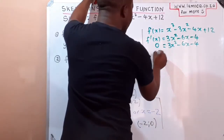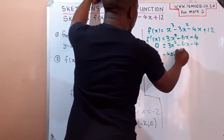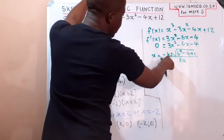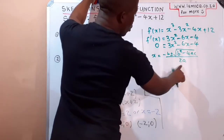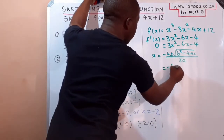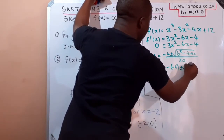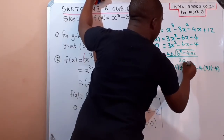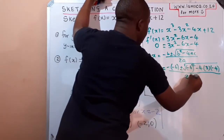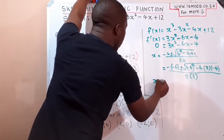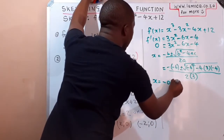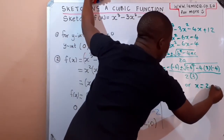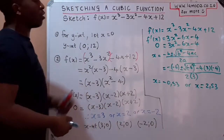Using the quadratic formula: x = (−b ± √(b² − 4ac)) / 2a, where a = 3, b = −6, and c = −4. Substituting: x = (6 ± √(36 − 4·3·(−4))) / (2·3). When you evaluate this in your calculator, the two x-values come out as approximately x ≈ −0.53 and x ≈ 2.53. Those are the two x-coordinates where the gradient of the graph is zero — the x-coordinates of the turning points.